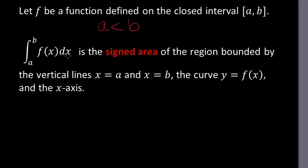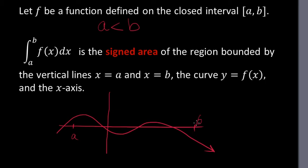When he goes to define the integral from a to b, we know that the lower limit is to the left of the upper limit on the x-axis. In other words, a is less than b. Then we can say that the integral from a to b of f of x is the signed area of the region bounded by the vertical lines x equals a, x equals b, the curve itself and the x-axis. So I'll draw you an example.